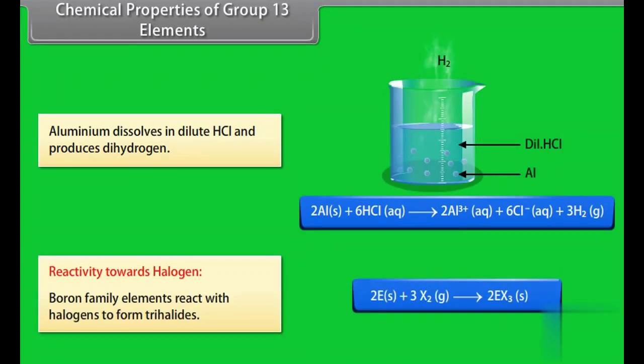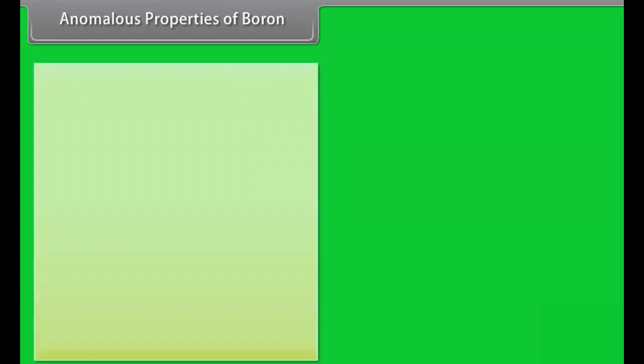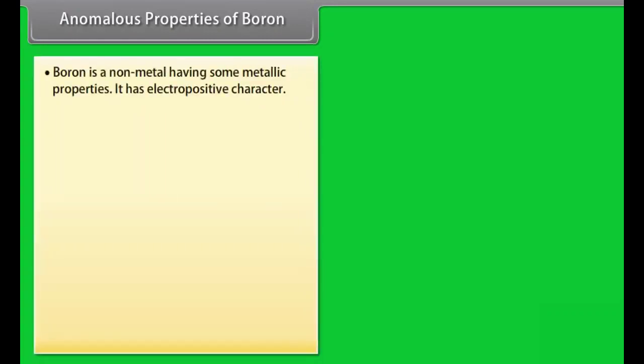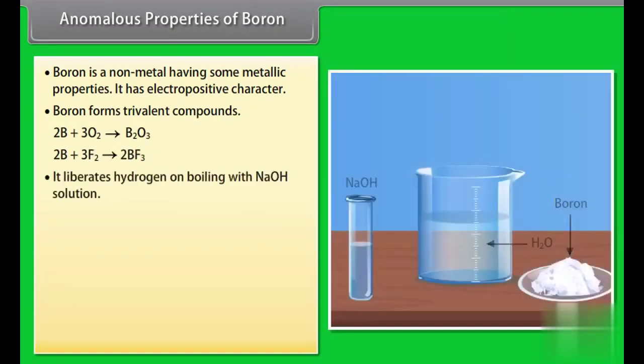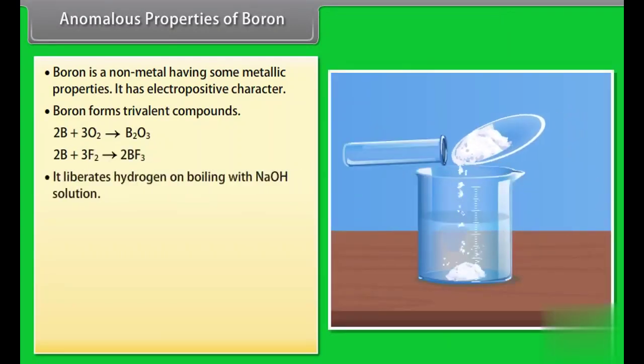Anomalous properties of boron. Boron is a non-metal having some metallic properties. It has electropositive character. Boron forms trivalent compound. It liberates hydrogen on boiling with NaOH solution.